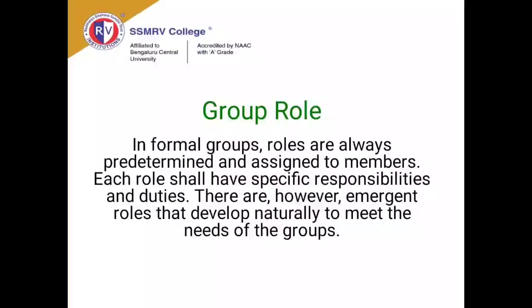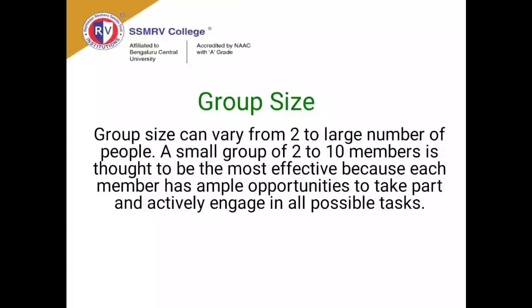Group role refers to the deeply assigned roles to members, covering responsibilities, duties, and delegation of authority. When members are clarified about their roles, bandwidth, and responsibilities, they perform better. Group role gives clarity toward goal attainment. Group size is the arithmetic number of members — a minimum of two is required, but to retain the essence and effectiveness of a group, an optimal size of two to ten people is recommended. More people leads to more scatteredness, so choosing a number between two and ten is advisable.